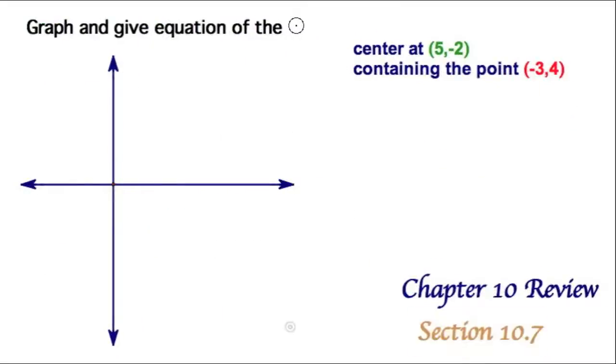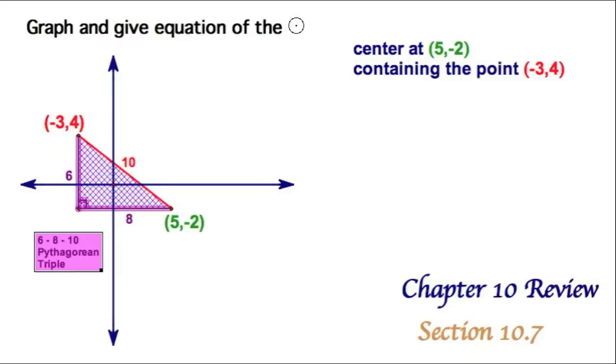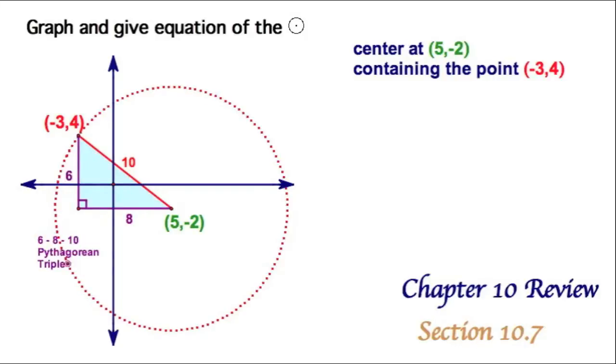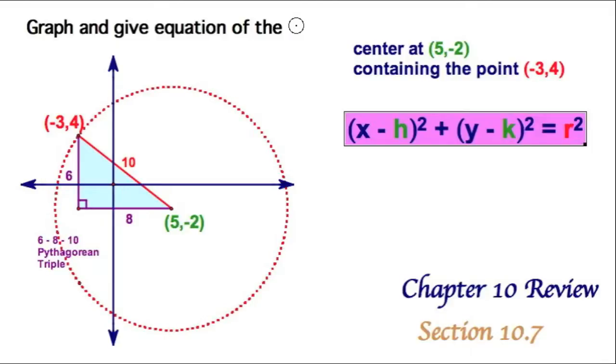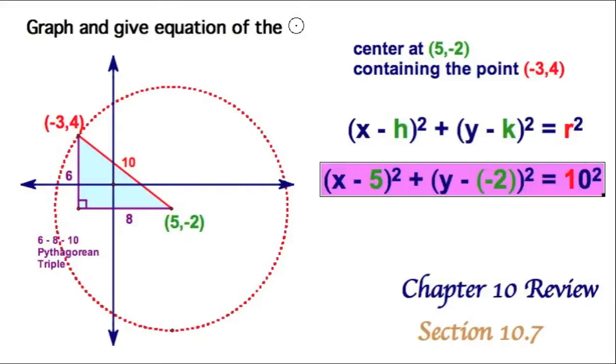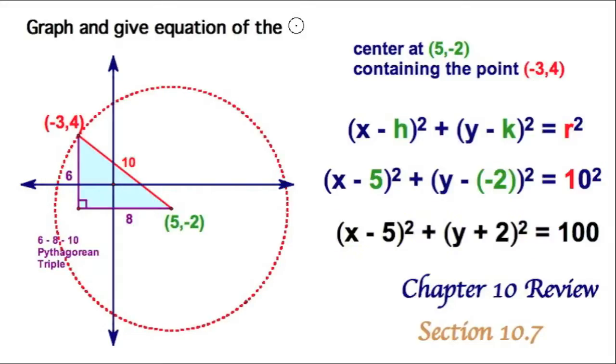And finally, in section 7, we were considering graphing circles on the coordinate plane. We'll just go through one example. You've got your center right here in green containing this point over here in red. And you remember we could find that radius using Pythagorean theorem, or in this case a triple or distance formula. Either way. And I take a point on that circle so I know where the circle is - it's over there. And then I want an equation for that. So there's my equation. Make the substitution, simplify, and we're done.